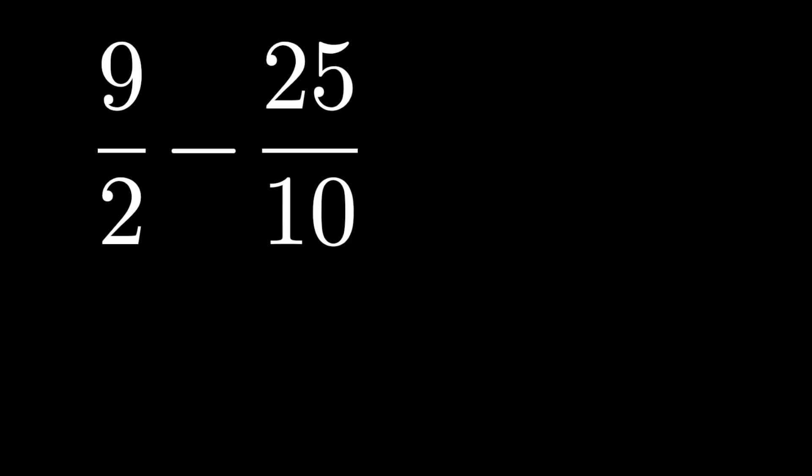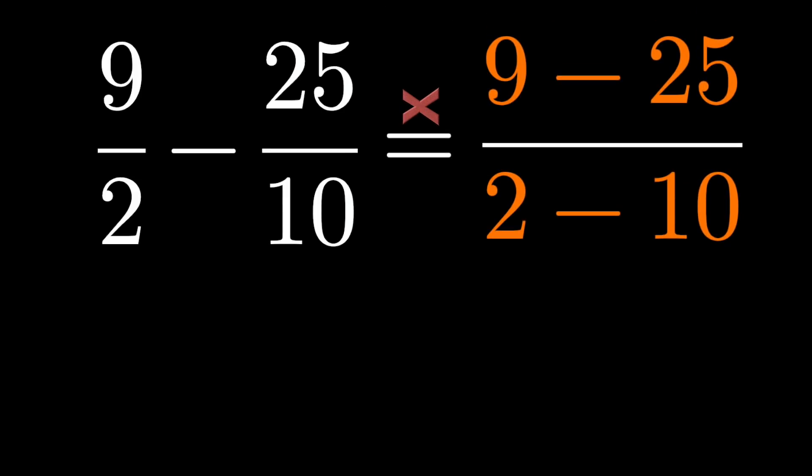How about 9 over 2 minus 25 over 10? Kind of an annoying expression to deal with. But everybody knows when you're subtracting two fractions, all you need to do is subtract the numerators and subtract the denominators. We'll get minus 16 over minus 8, which is the correct answer, 2.